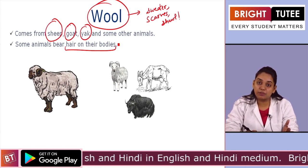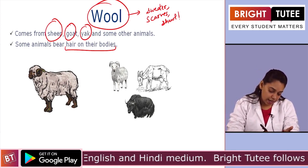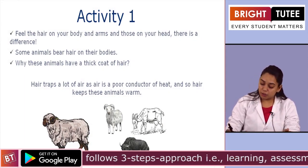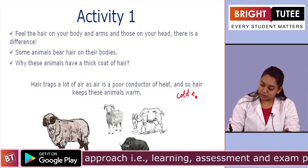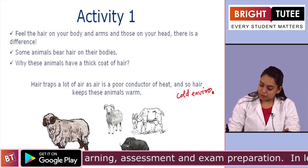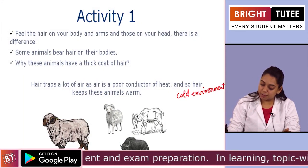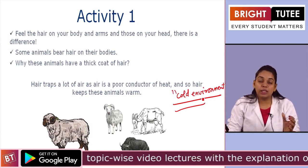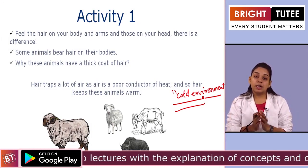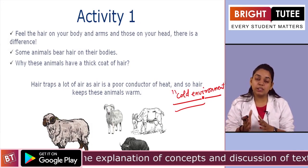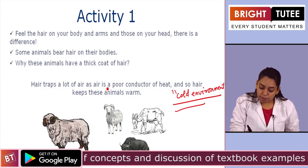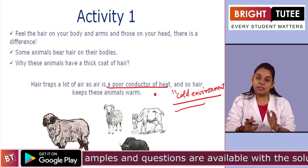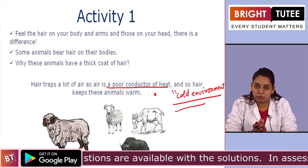But why do animals have this hair on their bodies? They have this kind of a furry coating on their bodies in order to protect them from cold environment. Their fur or this covering traps the air between them. And as air is a poor conductor of heat, it helps to keep the animals warm and saves them from the cold environment.